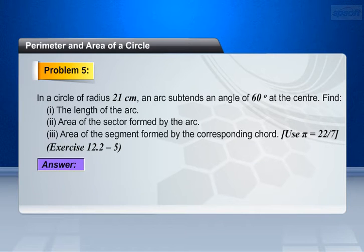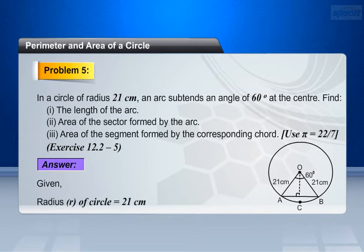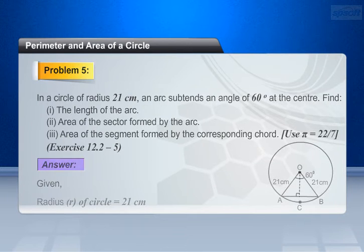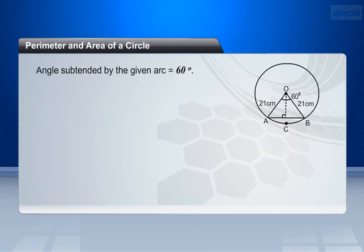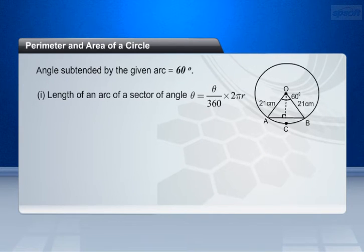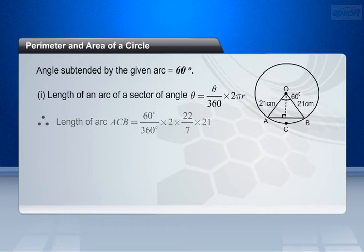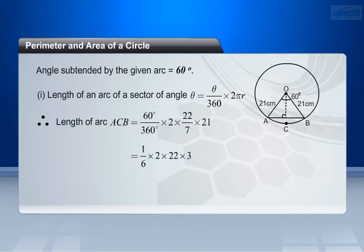Answer. Given that radius r of the circle equals 21 cm. Angle subtended by the given arc equals 60 degrees. We know that length of an arc of a sector of angle theta equals theta by 360 into 2 pi r. Therefore, the length of arc ACB equals 60 degrees by 360 degrees into 2 into 22 by 7 into 21. This is equal to 1 by 6 into 2 into 22 into 3. This is equal to 22 cm.